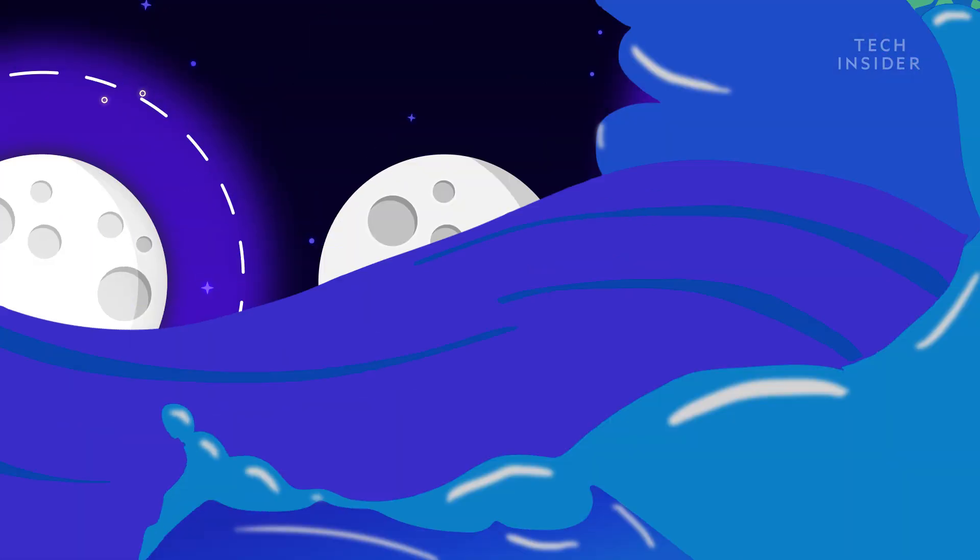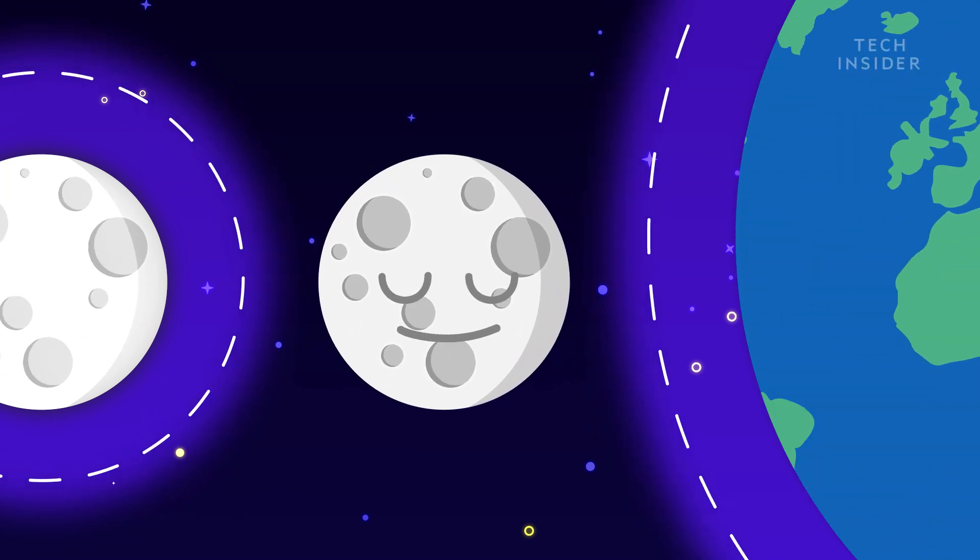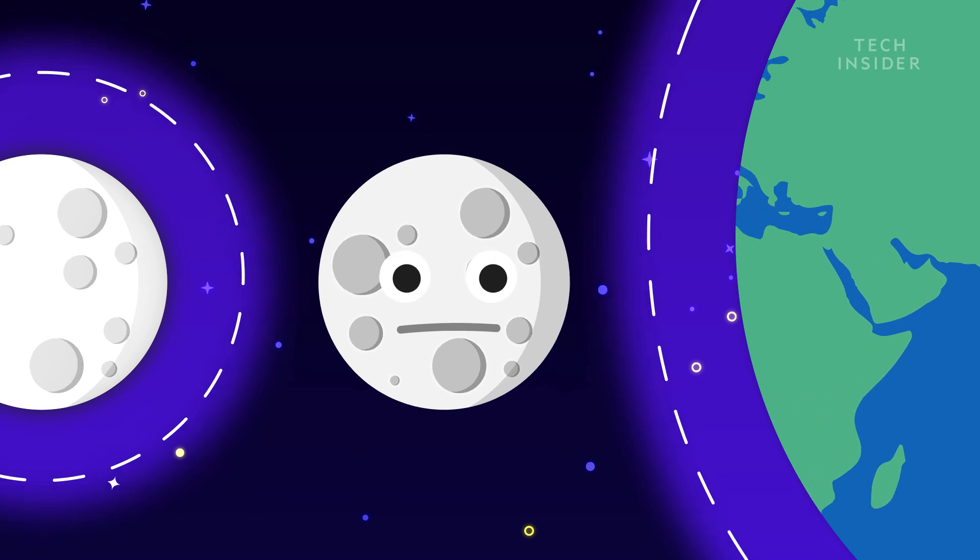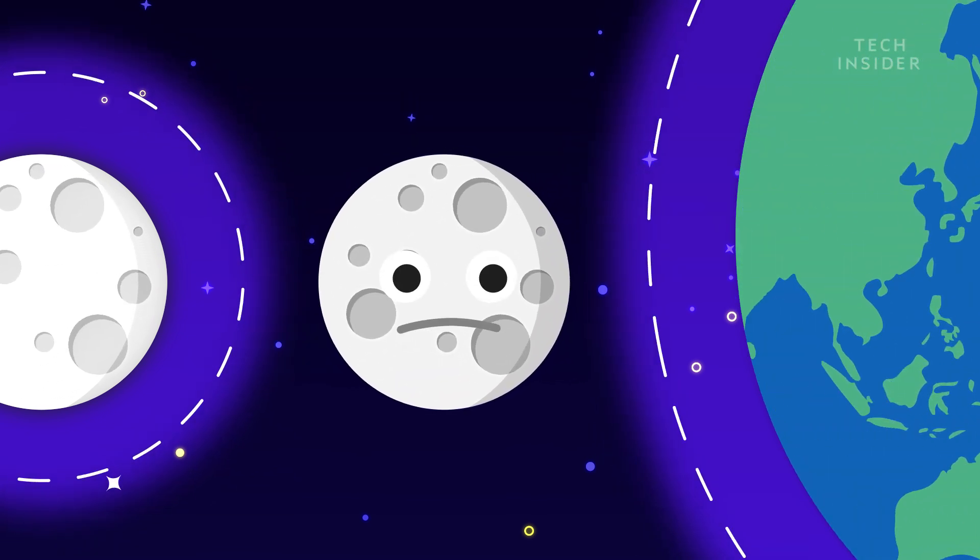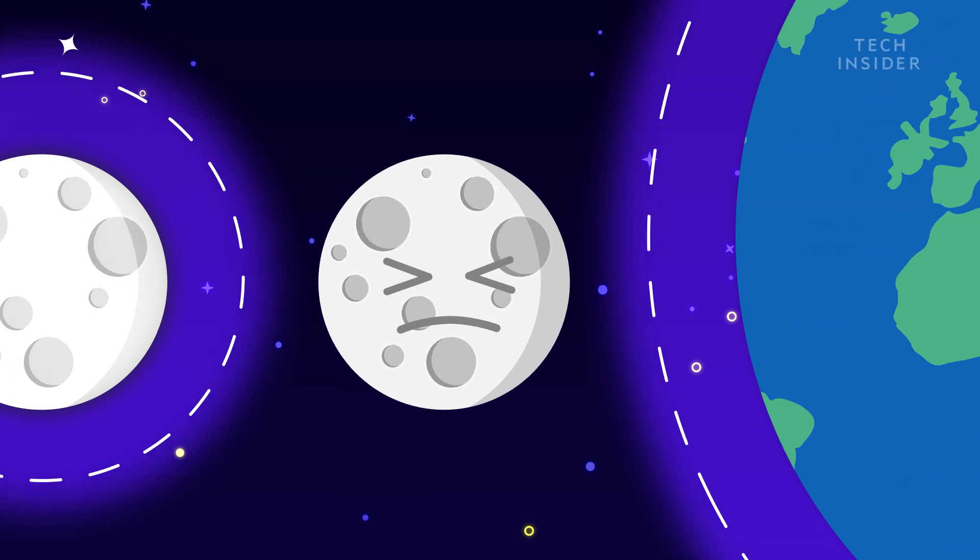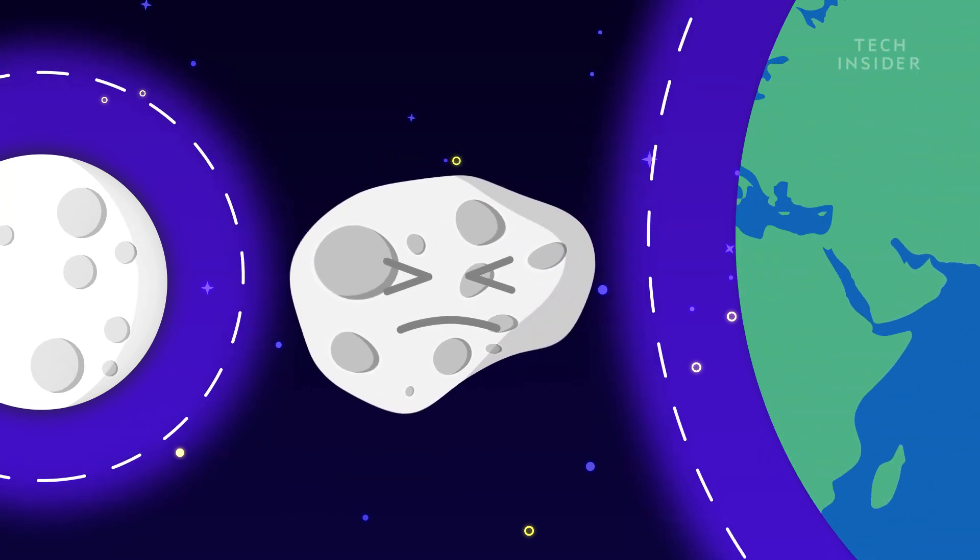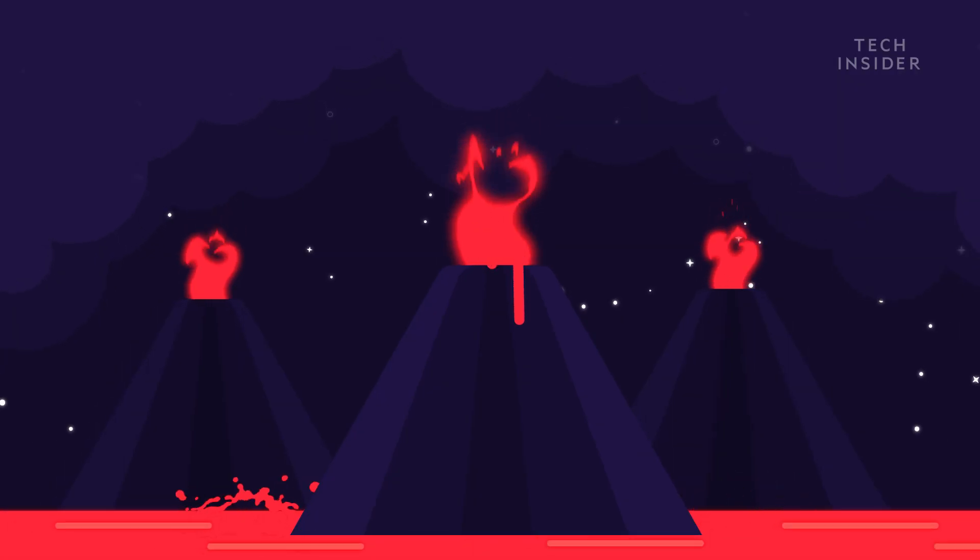But not all destruction would happen on Earth. The combined pull of the planet and the original moon would also yank on the second moon. The second moon would be caught in a tug of war between Earth and the original moon. The gravitational pull back and forth from both ends would warp the second moon's surface, triggering tremendous volcanic activity.